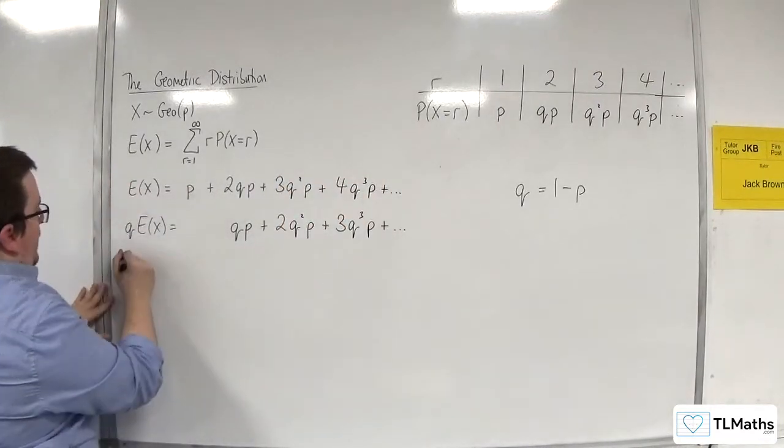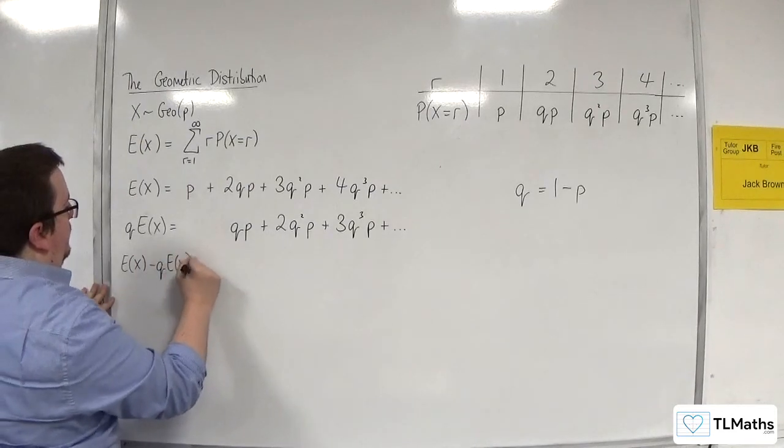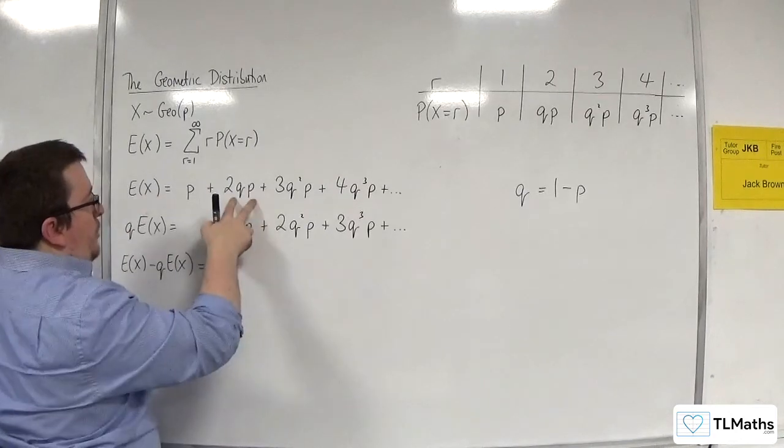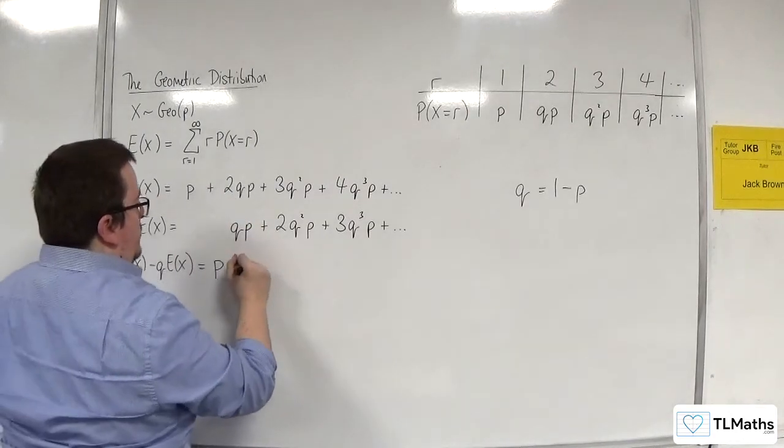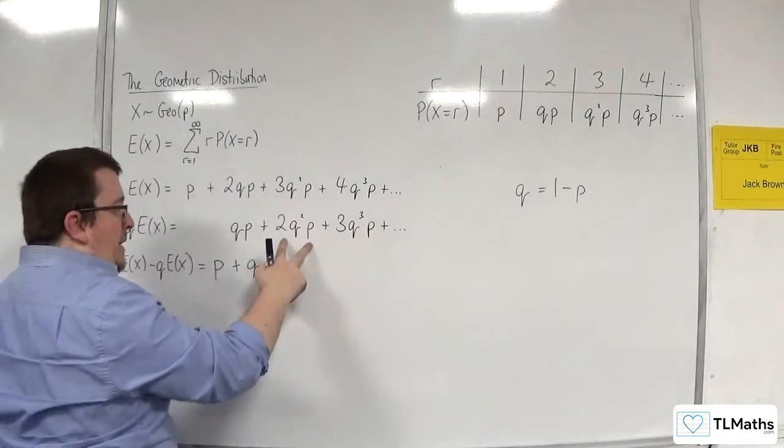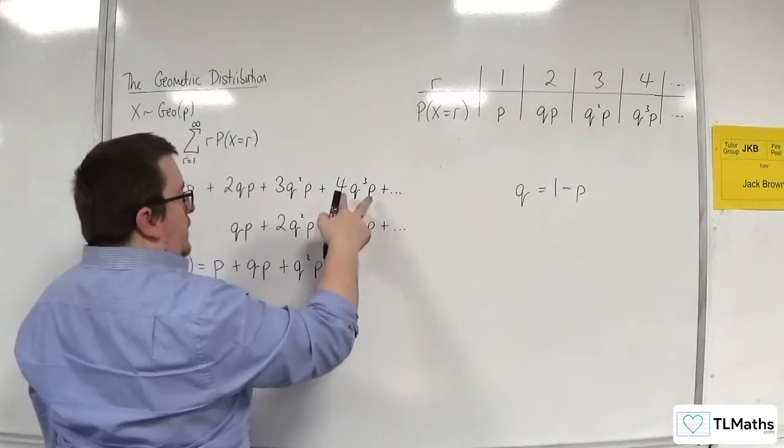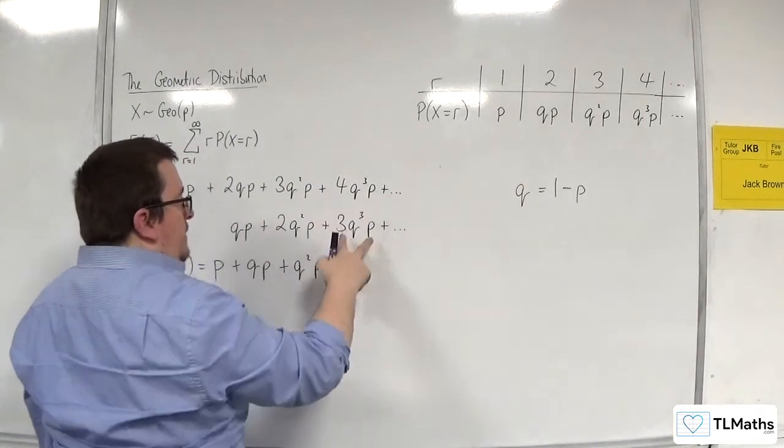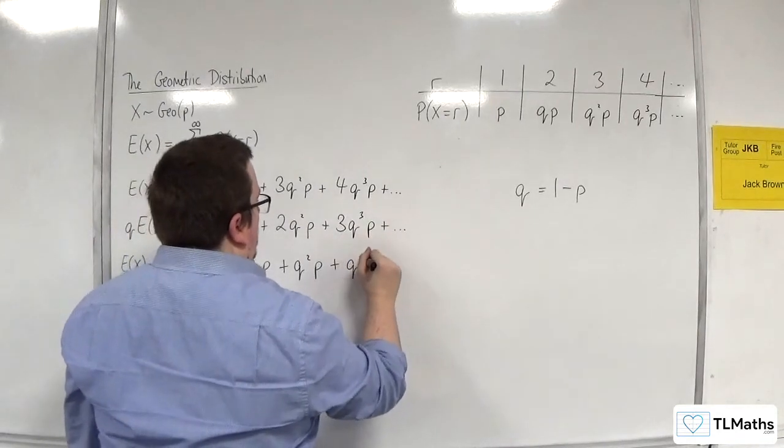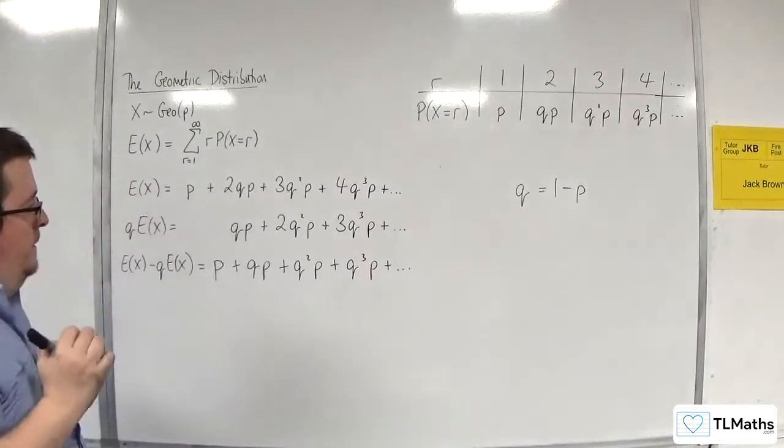So, on the left-hand side, I get E(X) take away q lots of E(X). I've got p, take away nothing. 2qp, take away qp, is just qp. 3q squared p, take away 2q squared p, is just q squared p. 4q cubed p, take away 3q cubed p, is going to be q cubed p, etc.